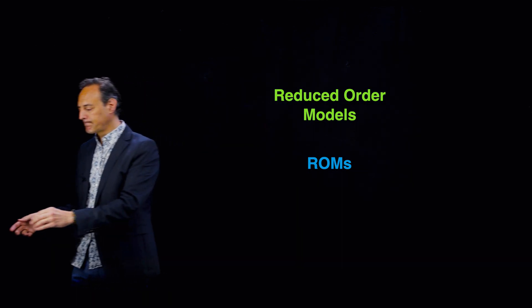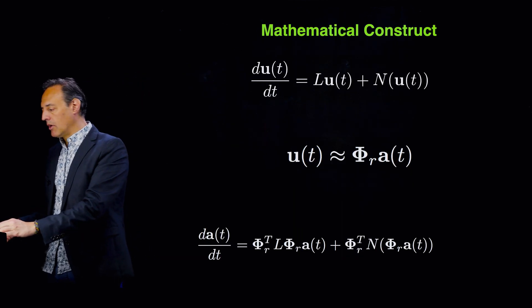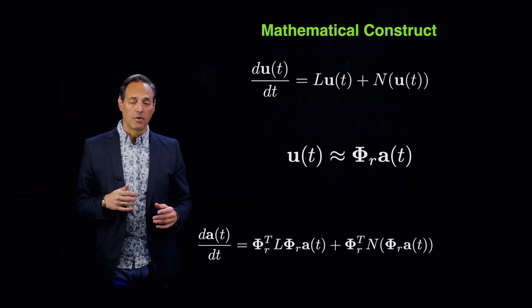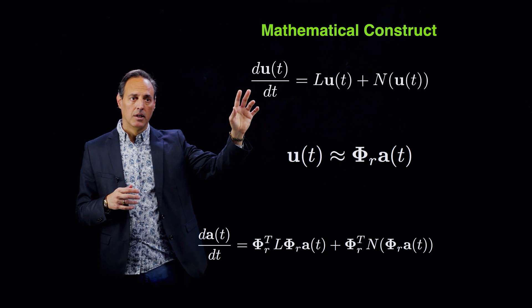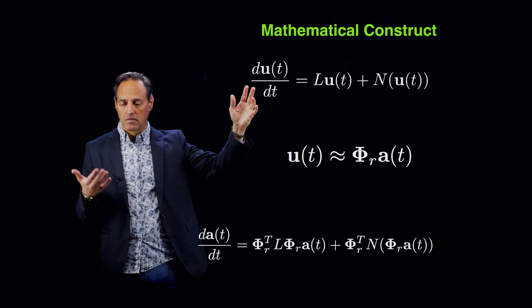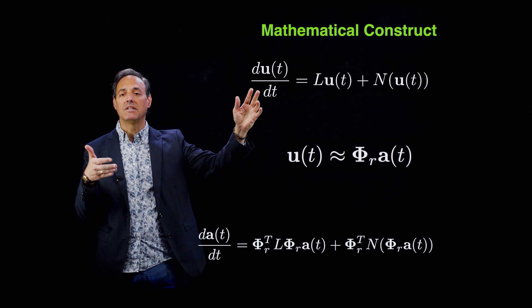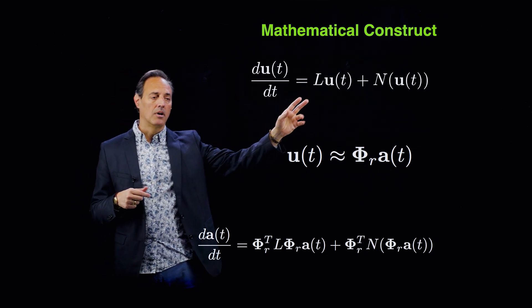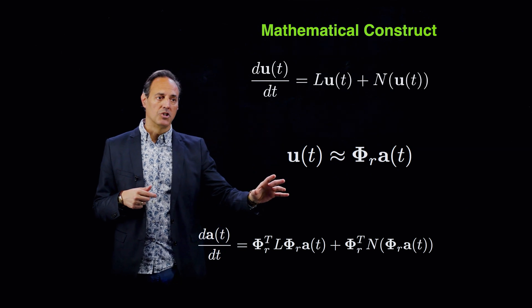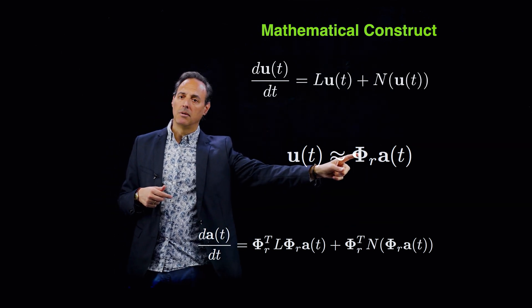Here's the construct I just want to remind everybody: we're after solving some PDE, some high dimensional state space that under discretization becomes in fact a high dimensional ODE system with a linear part and nonlinear part. We want to project into a subspace of the POD modes.